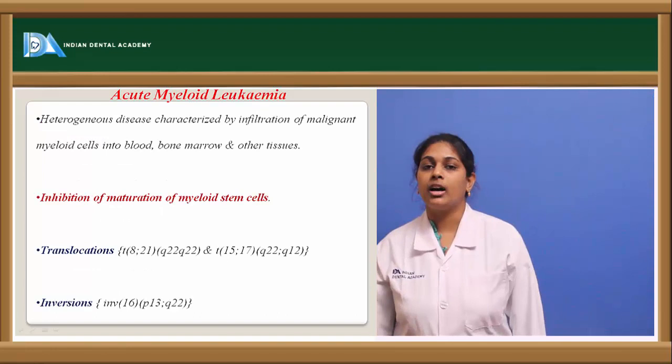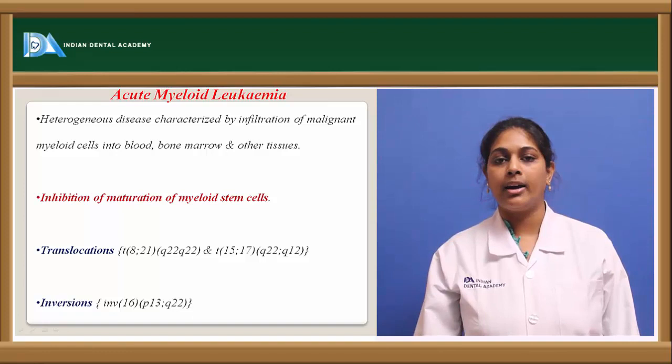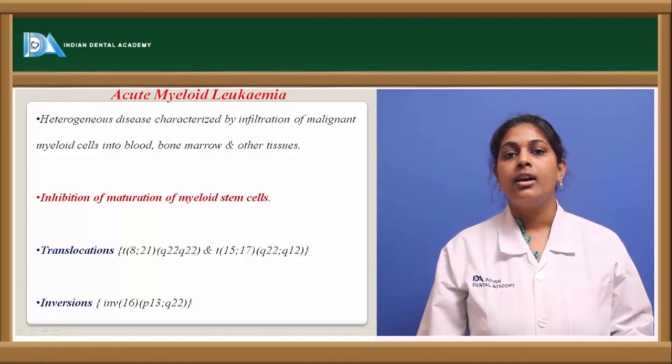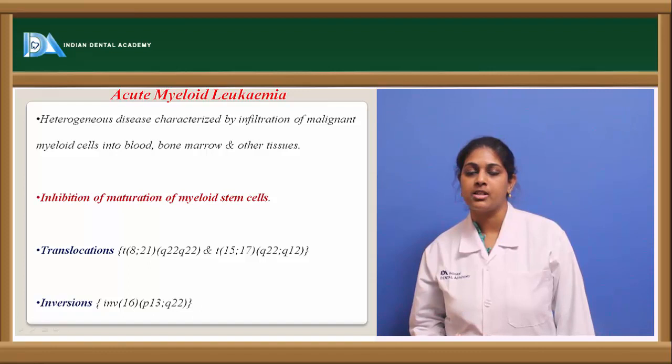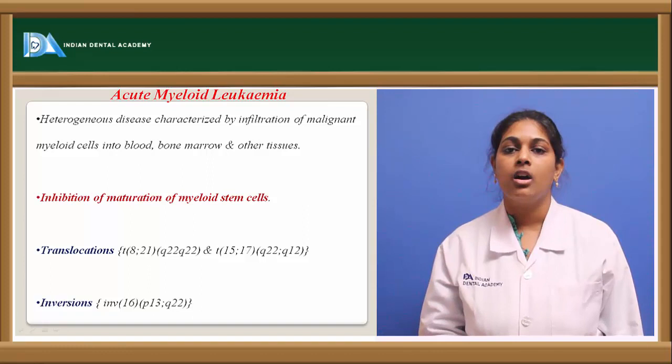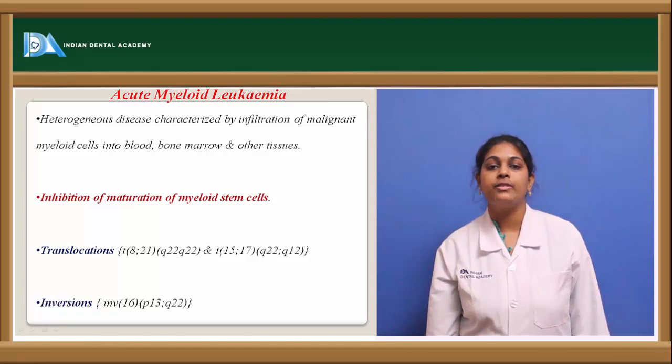Acute myeloid leukemia is a heterogeneous defect characterized by infiltration of malignant myeloid lineage cells into the blood, bone marrow, and other tissues. It results from inhibition of the maturation of the myeloid stem cell — which is blocked from differentiating into further WBC cells. The genetic basis of AML includes translocation of chromosomes 8 and 21, abbreviated as t(8;21)(q22;q22), referring to the long arm regions.